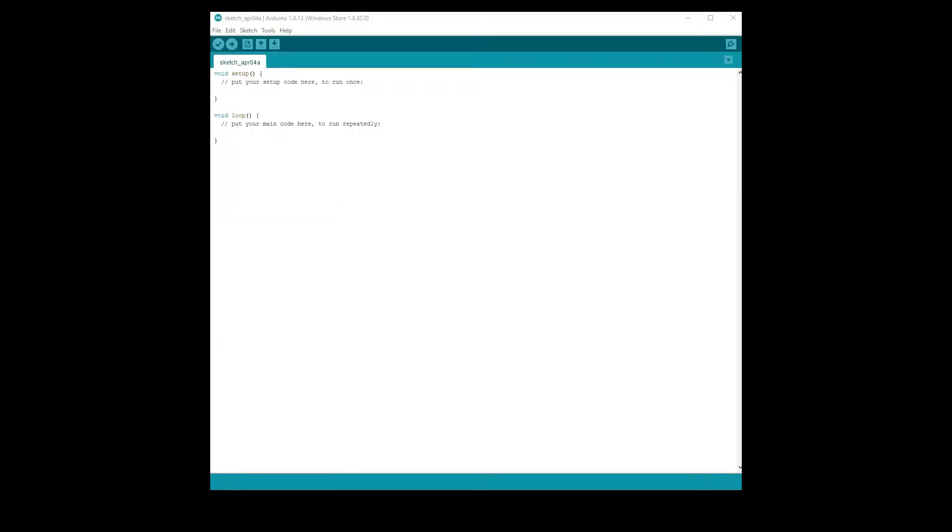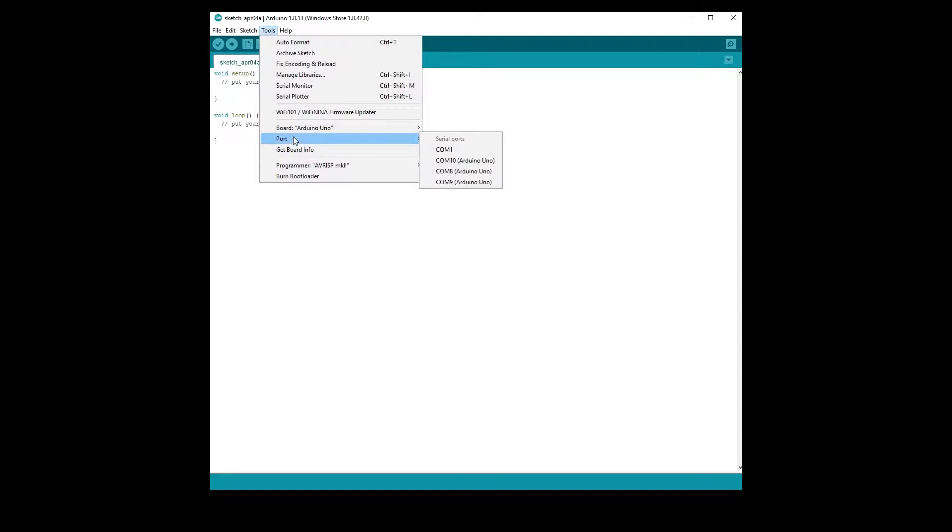Let's jump onto the computer and have a look at our code. Now the first thing to do is to see whether the computer can see our Arduinos. So we come up to tools, we go to port and you can see COM1089 Arduino Uno Uno Uno. So that's our three Unos on the wall.